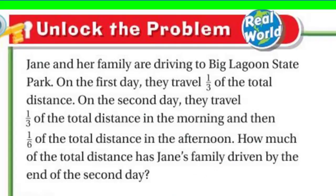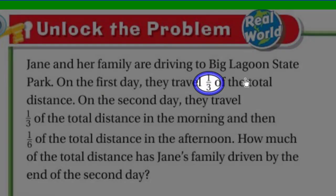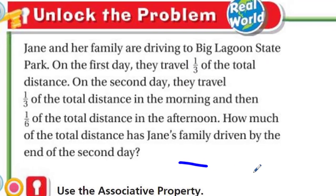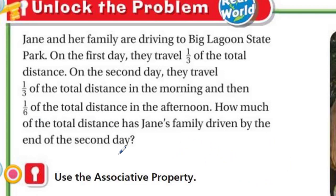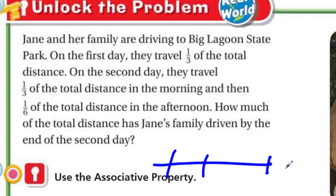Moving on to the actual problem. It says Jane and her family are driving to Big Lagoon State Park. On the first day, they travel one-third of the total distance. On the second day, they travel one-third of the total distance in the morning and also one-sixth in the afternoon. It's like we're adding all these numbers together, as you can see.